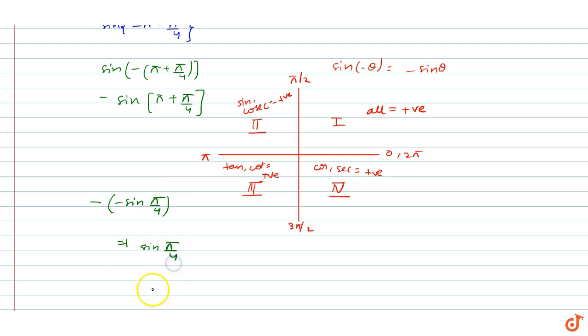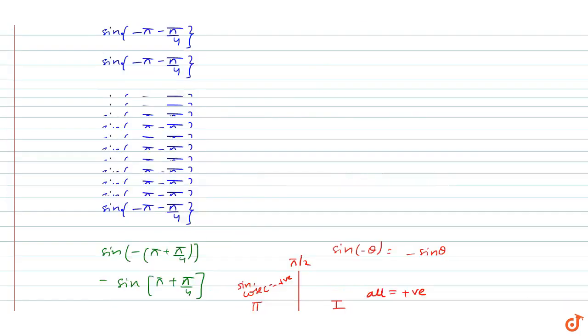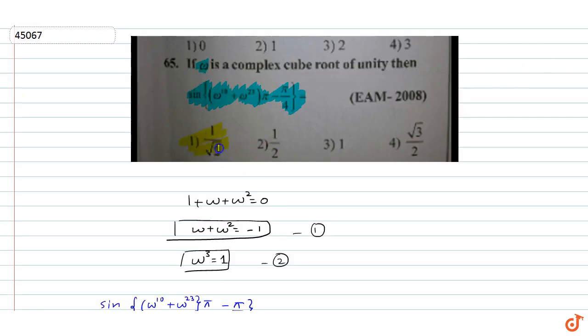And sin(pi by 4) equals 1 by root 2. So our answer is 1 by root 2, which is option 1.